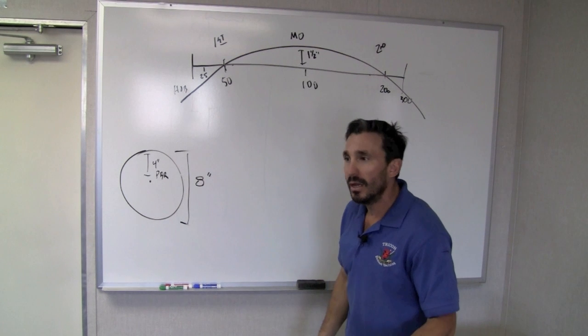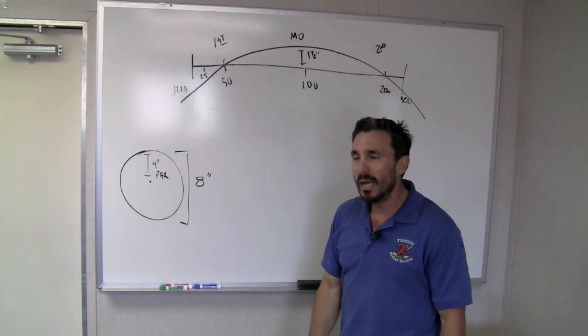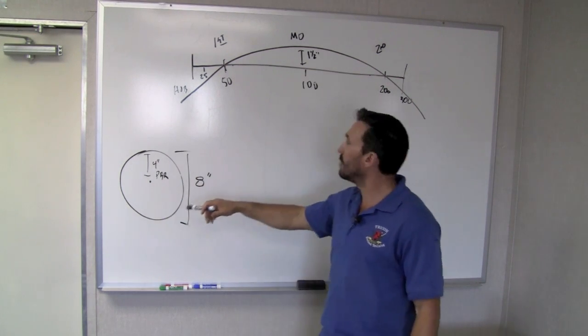Even if it climbed up to two inches at say the 100, 125, 150 yard line, that's still well within that four inch PBR that I'm looking for.